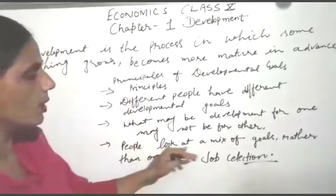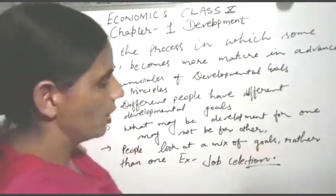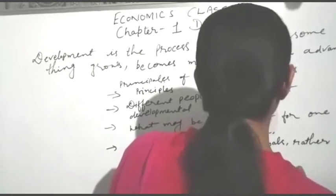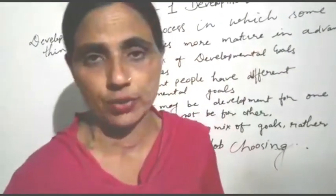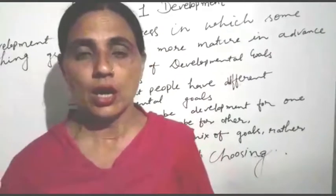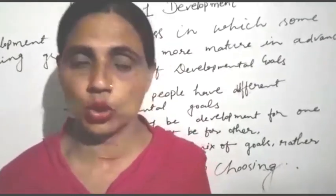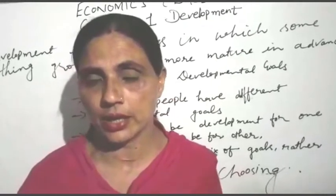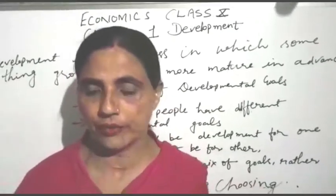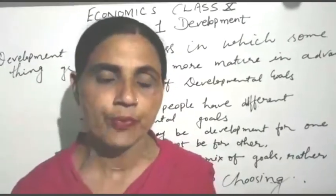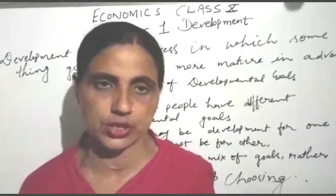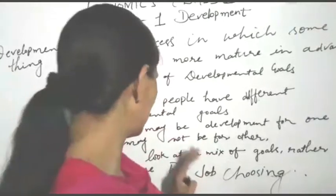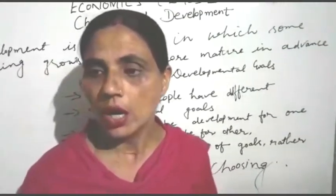The third point is: people look at a mix of goals rather than just one. For example, when choosing a job, like a teacher working for an institution — salary alone is not sufficient. Beside the salary, the person considers working hours, respectful environment, and other benefits. So job selection involves many points.